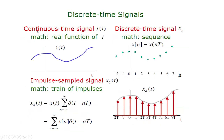Let's look at the process of sampling. This is a continuous time signal having this kind of shape, and this is the sampled signal. Mathematically speaking, you multiply the input signal with a train of impulses shifted by capital T, and then you will get X delta T, which is your sampled signal. This is the mathematical explanation of how you obtain the sampled signal from an analog signal.